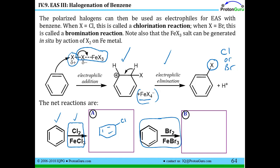The same applies for bromination: the reagents you mix together to make your electrophile are Br2 and FeBr3, and you substitute one of the hydrogens on benzene for a bromine.